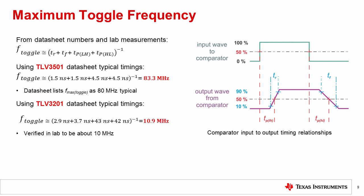Taking the TLV3201 as another example, we can calculate an approximate maximum toggle frequency of 10.9 megahertz. The datasheet does not specify a value, but lab tests verified that the limit is around 10 megahertz.